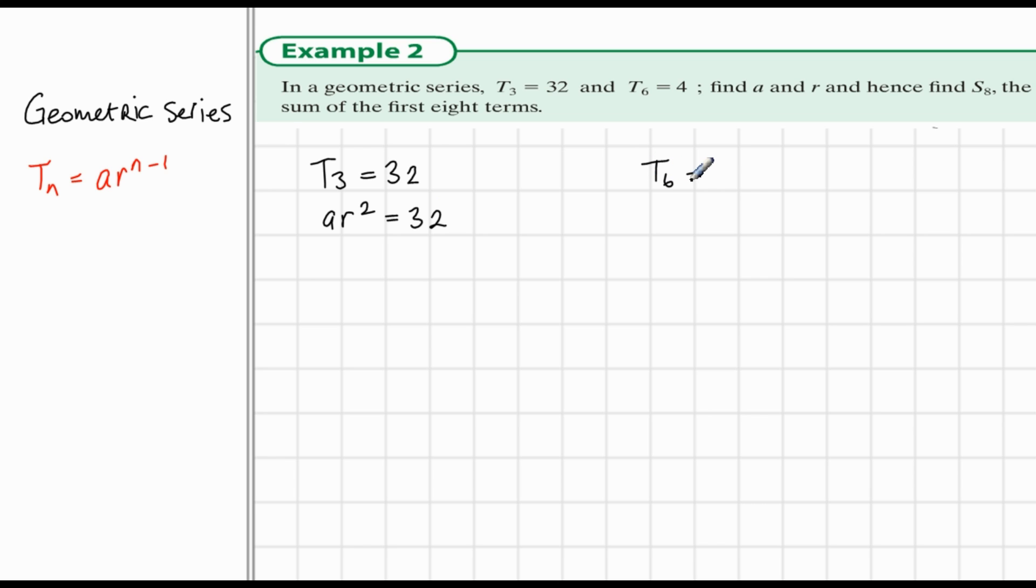We also know that term 6 is equal to 4. Using the same formula, we can write that ar to the power of 6 minus 1, which is 5, is equal to 4. Now, we can use these two bits of information, these simultaneous equations, to find out what a and r is.